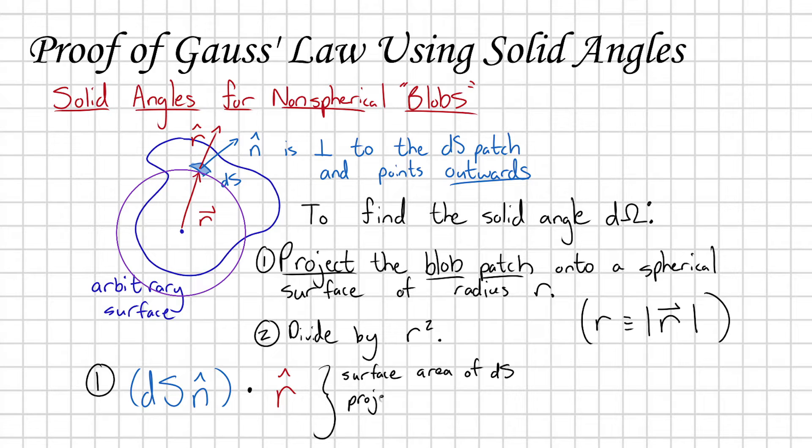We're using the overlap of these two vectors to tell us the effective area of dS when projected onto the spherical surface of radius r. And now, step two, we just divide by r squared.